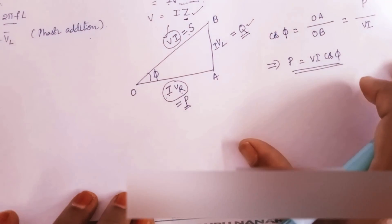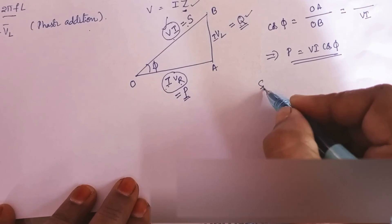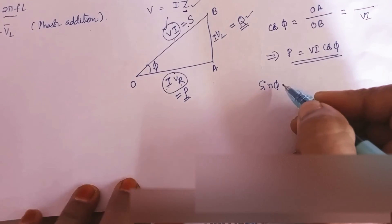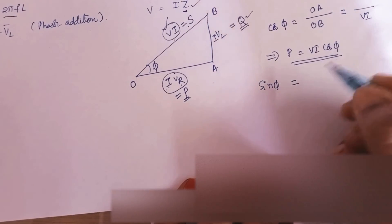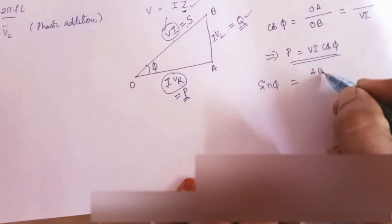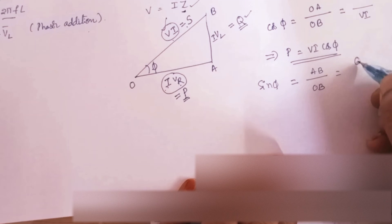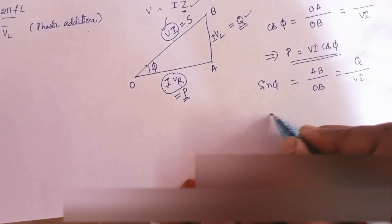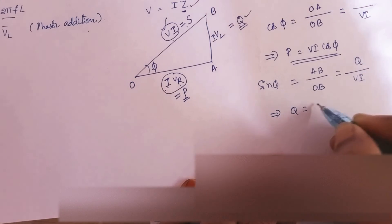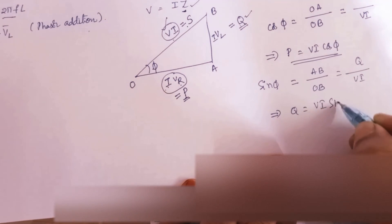And similarly, if you can consider sine phi, so opposite side that is AB by OB. AB is nothing but Q, reactive power by VI. So from this relation, Q will be VI sin phi.